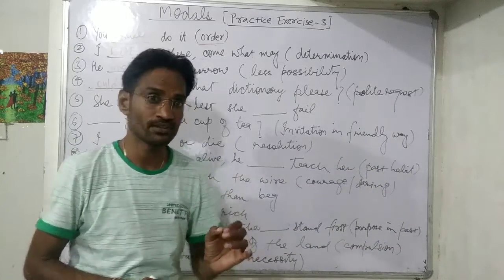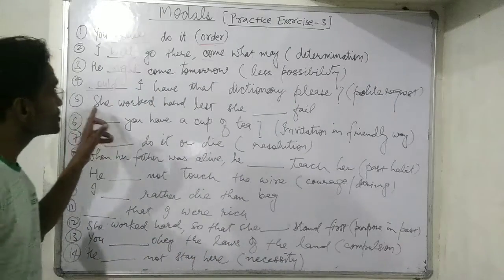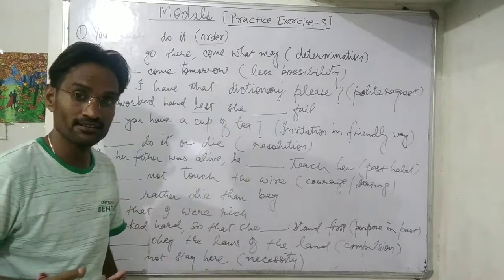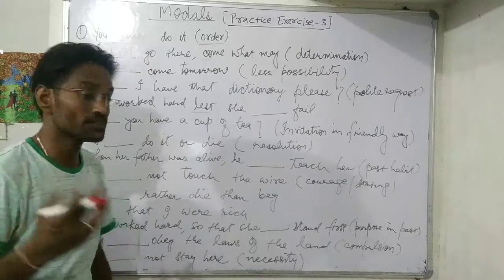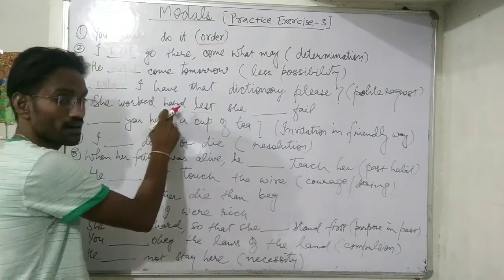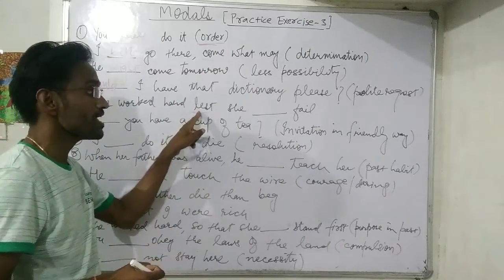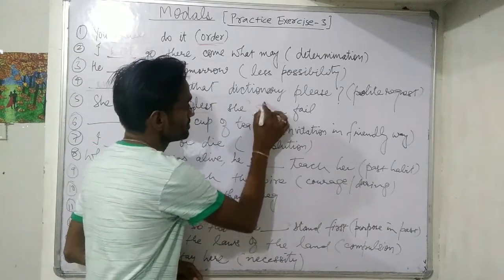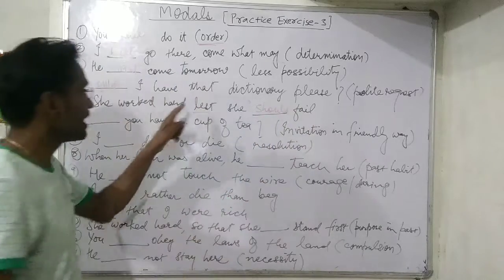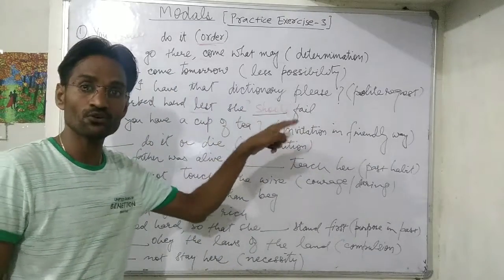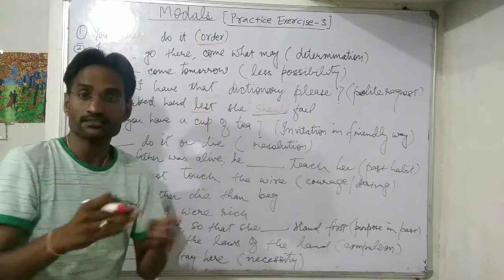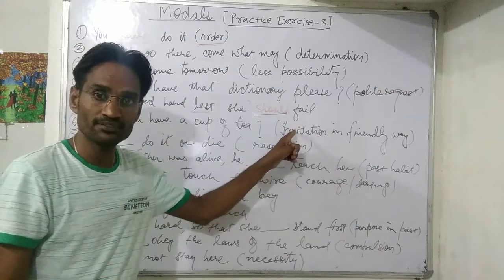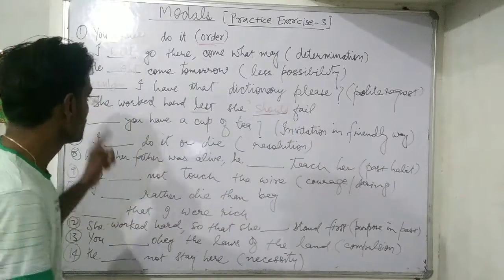Next: 'She worked hard lest she failed.' This talks about purpose — she worked hard so that she would not fail. With 'lest' we always use the modal 'should.' So: 'She worked hard lest she should fail.' It shows purpose.